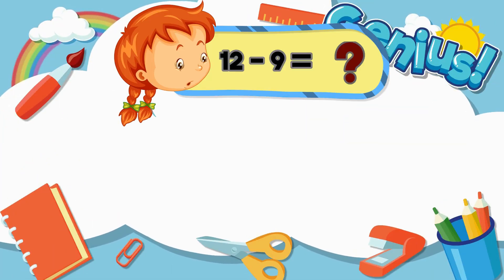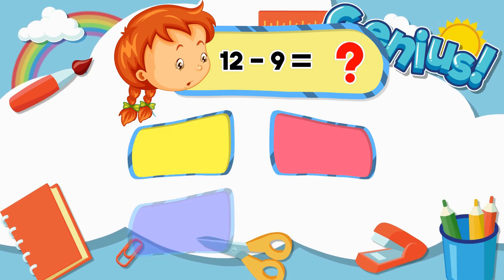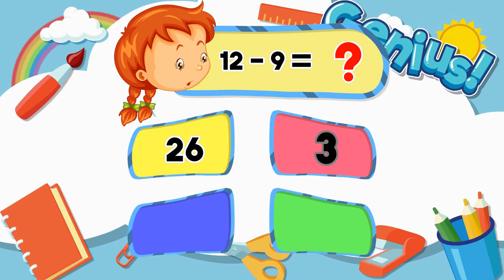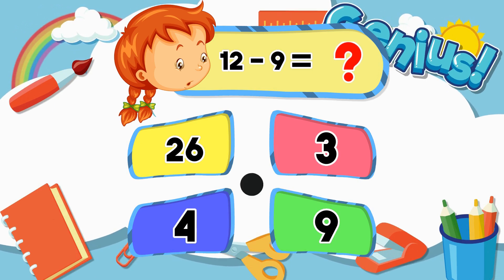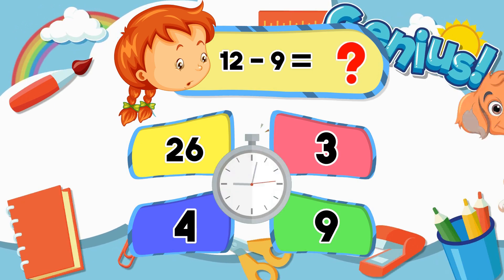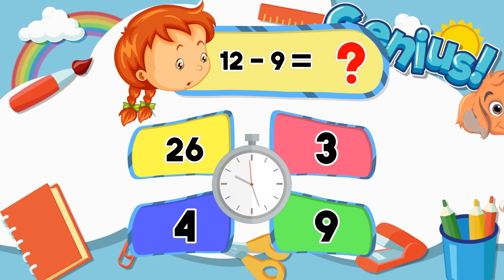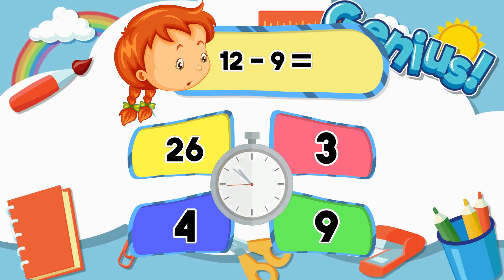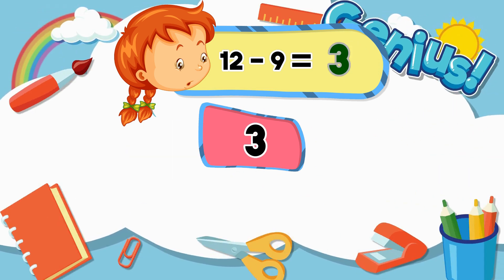What is twelve minus nine? Twenty-three, four, nine, three. Thank you.